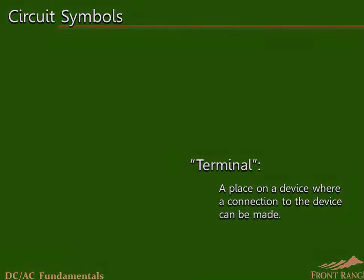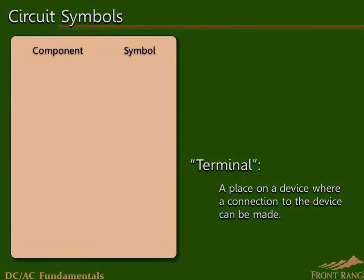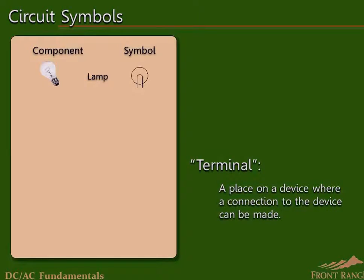Here are some very common electrical devices and their symbols. A lamp is a common electrical load. Recall from the last section that a load is a device that converts electrical energy into some other form of energy. A lamp is a load that converts electrical energy into light energy. A cell is one type of a DC power source.